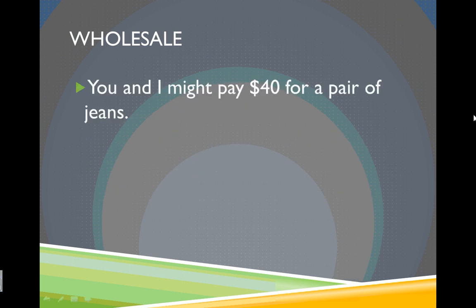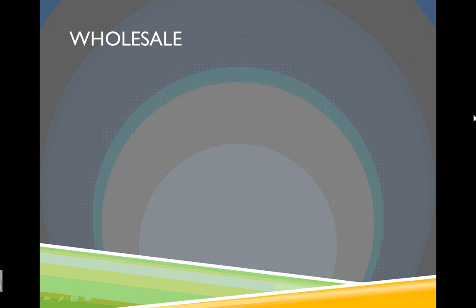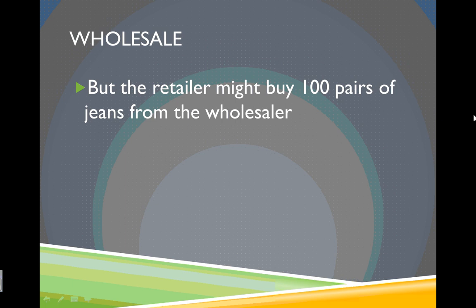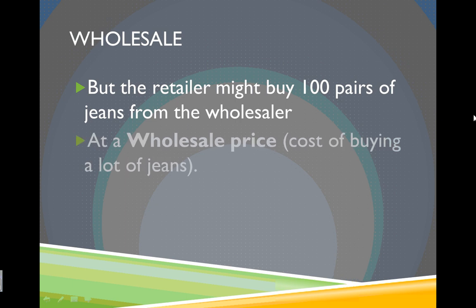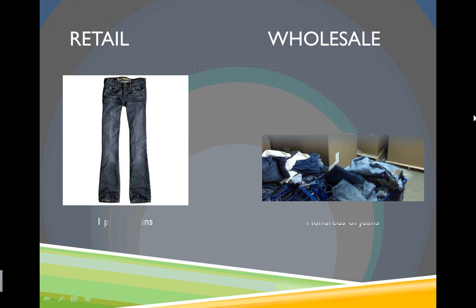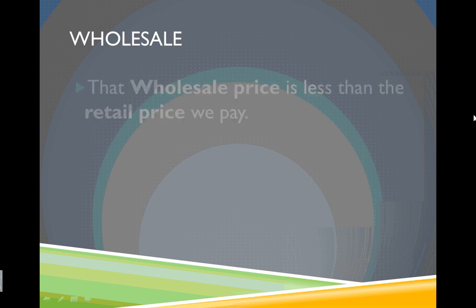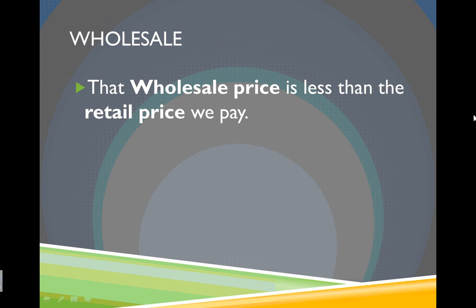So you and I might pay $40 for a pair of jeans — that's the retail price, the price sold to the public. But the retailer might buy a hundred pairs of jeans from the wholesaler at a wholesale price, which is the cost of buying a lot of jeans at once. In retail we might buy one pair; in wholesale they might buy hundreds, maybe even thousands. That wholesale price they pay is less than the retail price we pay.